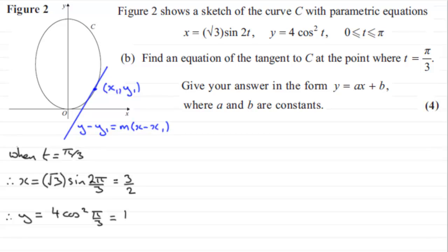Now that we've got that, we just need to get the gradient m. In the previous part we showed that dy/dx was equal to -2/3 √3 tan(2t), so when t equals π/3, what does dy/dx come to?